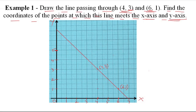Now we have a line drawn. The question asks us to find the coordinates of the points at which this line meets the x-axis and the y-axis. We have to identify the coordinate of the point where this line meets the x-axis. That coordinate is A(7,0) — because the y-coordinate on the x-axis is always 0.